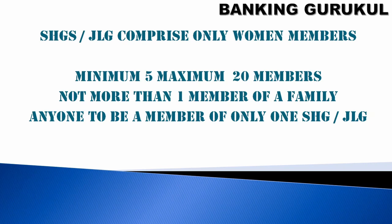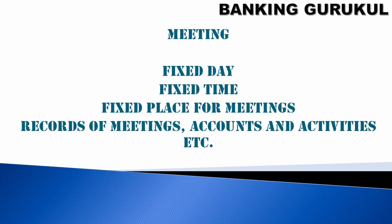Loans are given only to these women-member groups. The minimum size of a self-help group or joint liability group is five members and the maximum is twenty members. Only one member from a family can join a group — you cannot have two members from the same family. Additionally, an individual can be a member of only one self-help group or joint liability group; they cannot be a member of two groups simultaneously.